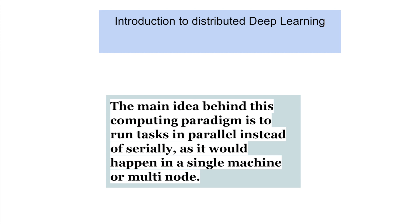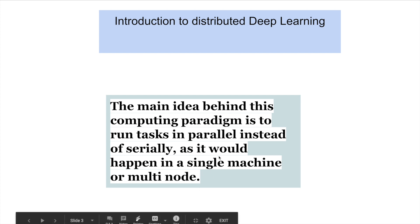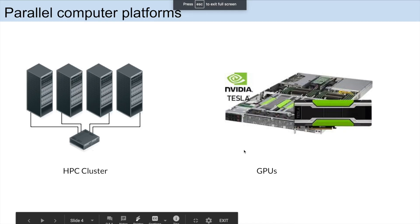In deep learning, you hear a lot about two things: first, we have to go deeper, and second, we have large datasets. We need to compute billions or millions of parameters. So how can we do that with a single GPU? If you have multiple distributed platforms, how will you do the training? The main idea behind this computing paradigm is to run tasks in parallel instead of serially, whether on a single machine or a multi-node machine.